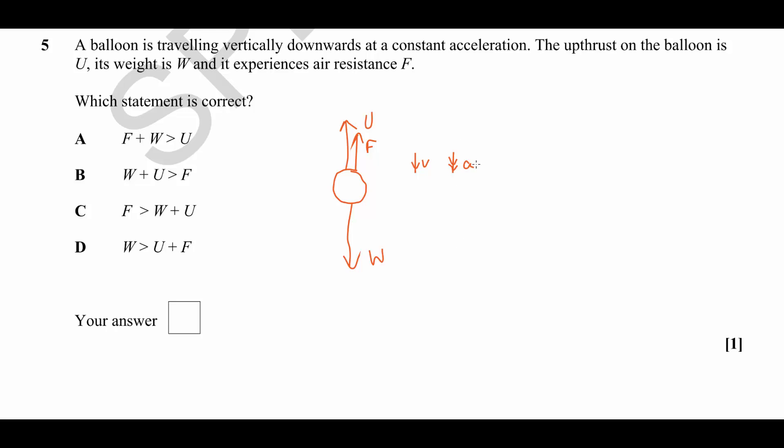Now we know that there is an acceleration downwards which means the net force is downwards. That means that W, the weight acting down, must be greater than the combination of U and F.